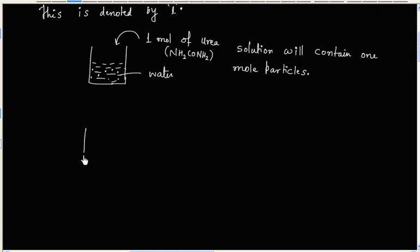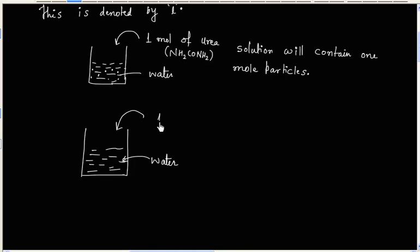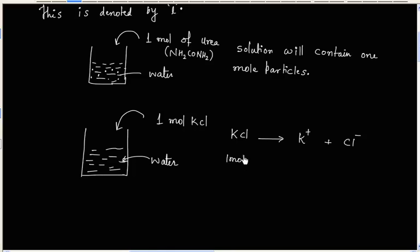Now in the second situation, we have the same vessel with water, and this time we are adding one mole of KCl. KCl is a strong electrolyte, so it will dissociate completely. When you add KCl into solution, it will dissociate to give K⁺ and Cl⁻ ions. So one mole of KCl will generate one mole of K⁺ and one mole of Cl⁻.